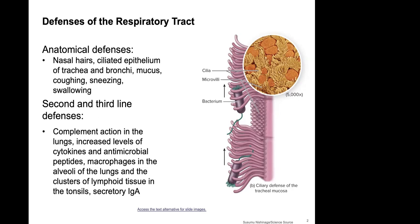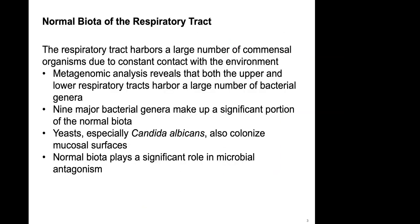The second and third lines of defense include complement action in the lungs — a series of proteins that kill bacteria — increased levels of cytokines and antimicrobial proteins, and various resident macrophages in the lungs that will phagocytize anything that ends up there.